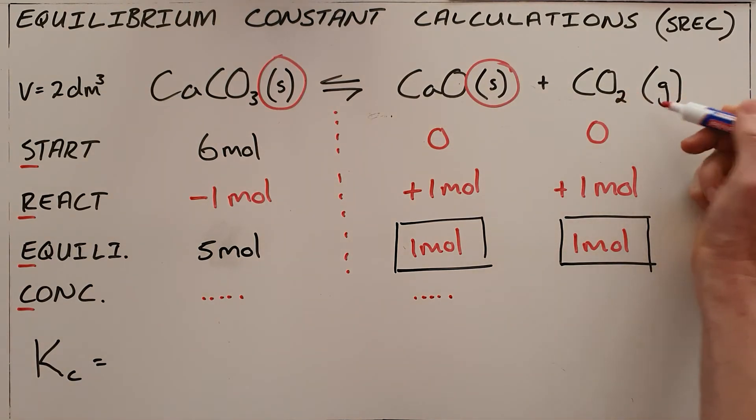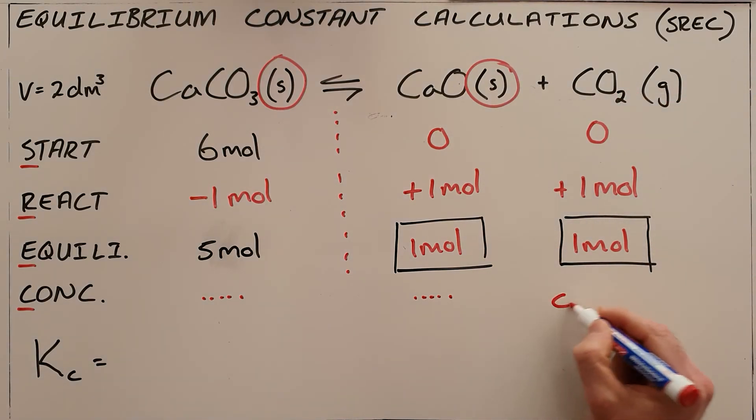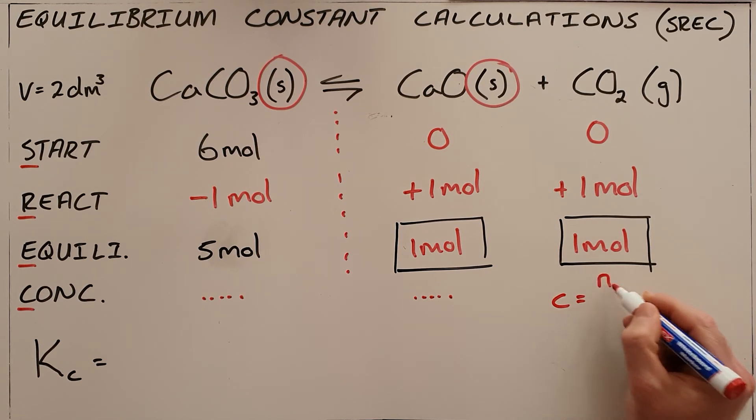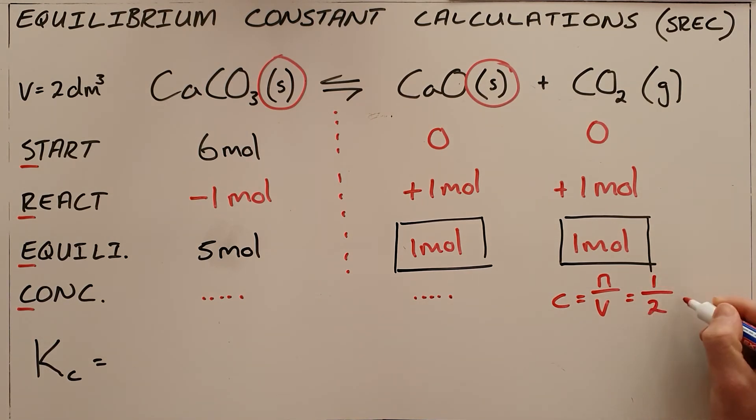The only substance that is a gas that has a concentration is carbon dioxide. We know concentration is number of moles over the volume, we've just calculated number of moles is 1, volume is 2, concentration is 0.5 moles per cubic decimeter.